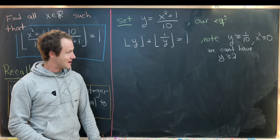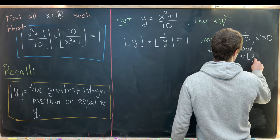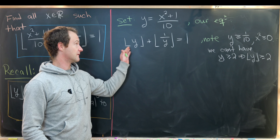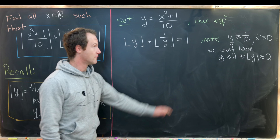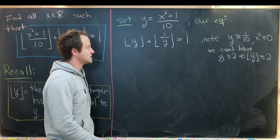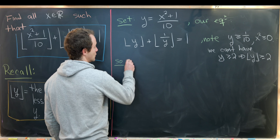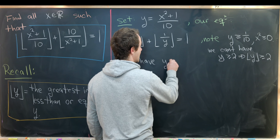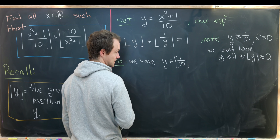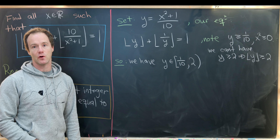Why can't we have y greater than or equal to 2? Because in that case the floor of y would be greater than or equal to 2, and then the floor of y plus the floor of 1 over y would be greater than or equal to 2, which cannot equal 1. So all of this means y is on the half-open interval [1/10, 2).